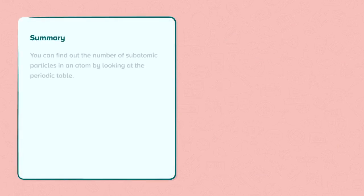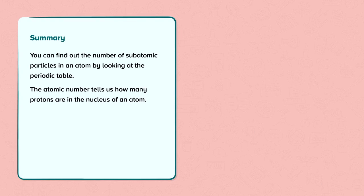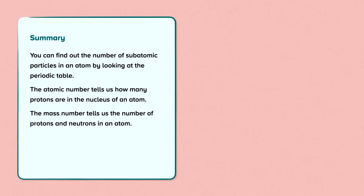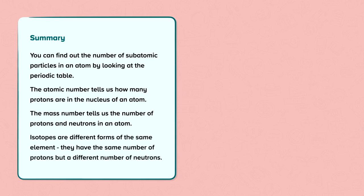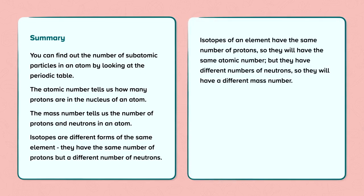To summarise: you can find out the number of subatomic particles in an atom by looking at the periodic table. The atomic number tells us how many protons are in the nucleus of an atom. The mass number tells us the number of protons and neutrons in an atom. Isotopes are different forms of the same element — they have the same number of protons but a different number of neutrons.